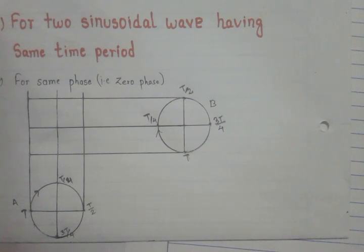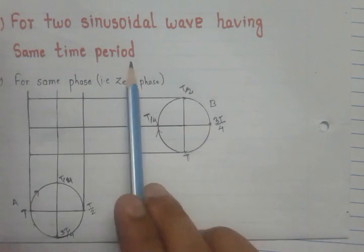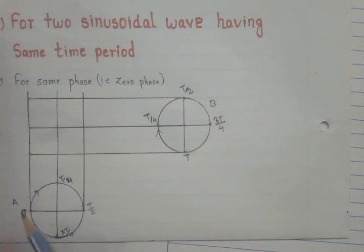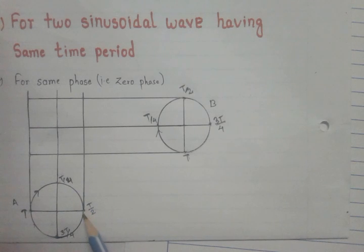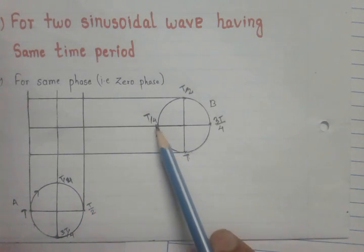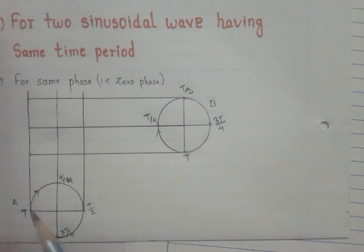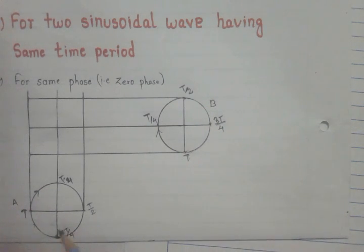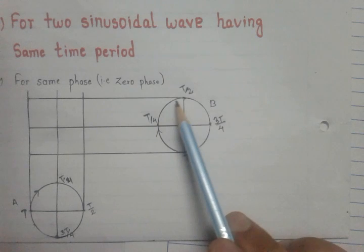Let's start with two sinusoidal waves having the same time period and same phase. First we draw two circles, circle A and circle B. Circle A represents the wave propagating in the x direction and circle B represents the sinusoidal wave propagating in the y direction. So these two wave motions are perpendicular to each other. The radius of circle A and the radius of circle B are equal.